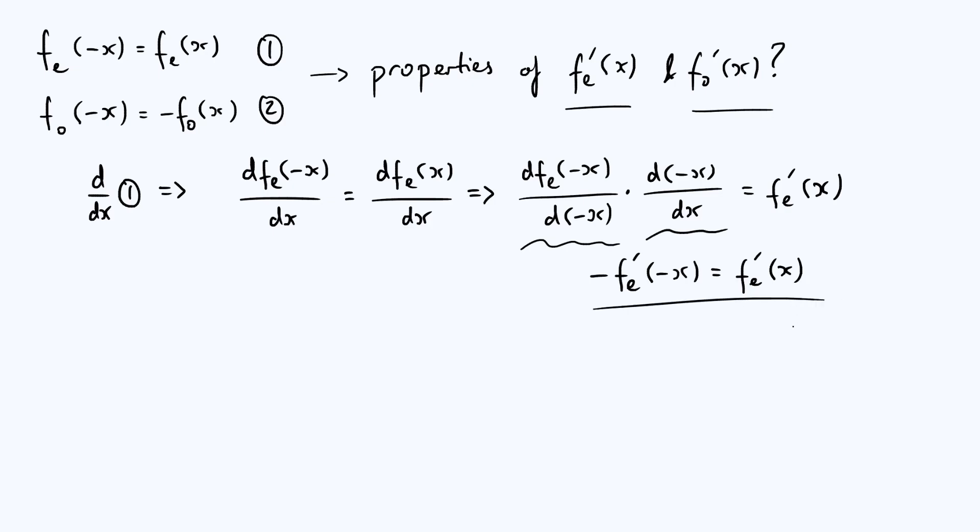Now, this is the defining property of an odd function, right? So that means fe dash is an odd function. So you differentiate an even function and you end up with an odd function. Now, you can possibly already see where this is going, but let's work through the whole thing just for completeness.